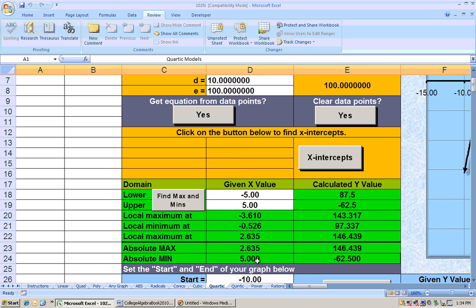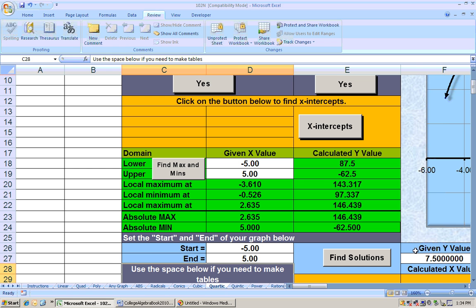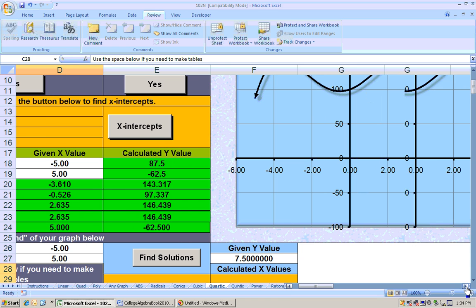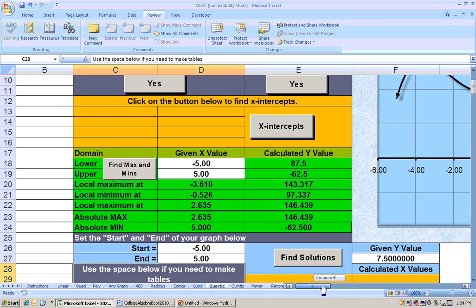And when you do that, you'll get the minimum is at this point right here, (5, -62.5). And you can always confirm that by setting your start and end of your graph to be the same as your lower and upper values of your domain. And you can see that the lowest spot is at 5. And remember to click that button.